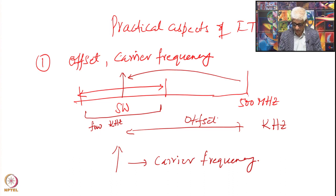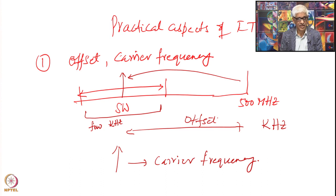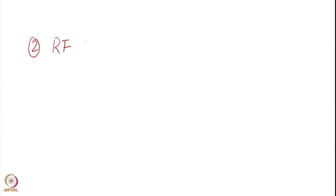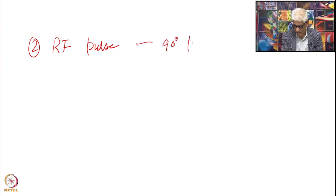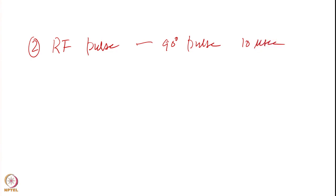The spectrometer frequency is the main frequency, but when I shift it and bring it to the center of my region or one end of the region, that is called the carrier frequency. The amount by which I shift is called the offset. The next parameter is the RF pulse — we said we have to apply a 90-degree pulse. This may be, let us say, 10 microseconds, and you must control it very well. It has to be exactly 10 microseconds, not 11, not 10.5. Perfect control is required in this RF pulse width.